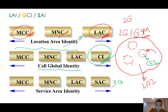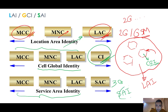we use SAI and SAC. SAI is Service Area Identity and SAC is Service Area Code. So for 3G, instead of LAI we have SAI and SAC — Service Area Identity and Service Area Code.